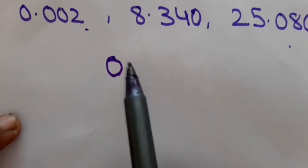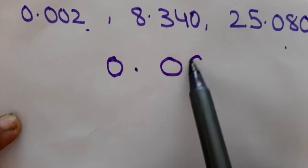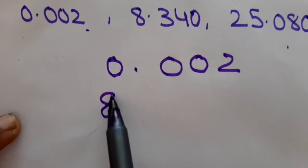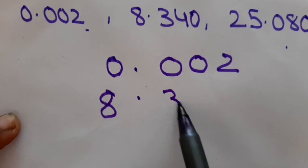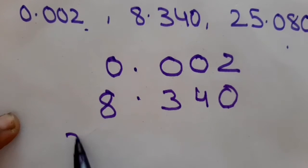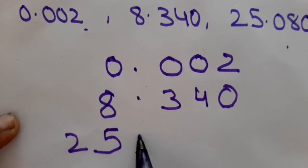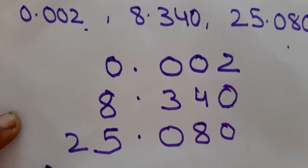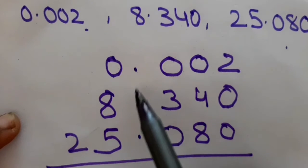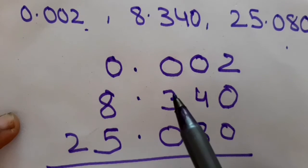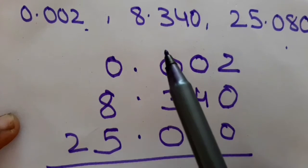Now you will arrange these decimal numbers in columns. Addition is simple as we do, but the first step is to make them like decimals, then arrange them in columns. When arranging in columns, be very careful: the tenths place should come under tenths place only. The decimal should come under decimal. Here, 0 is the tenths place, 3 is the tenths place in the second, and 0 is the tenths place in the third — so they should come in the same column.